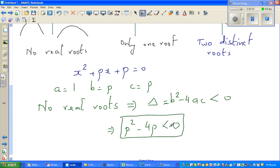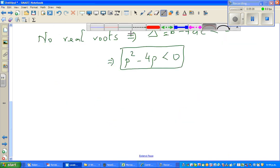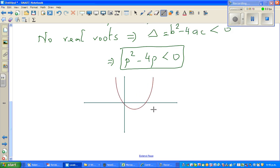Let me graph p squared minus 4p. If you graph the parabola of p squared minus 4p, it will look somewhat like this. These are the two roots. When you factorize this, when would this become 0? When p is 0, or when p is 4. That is 4 squared minus 16 is 0. So this is 0 and this is 4. This is the graph of p squared minus 4p.